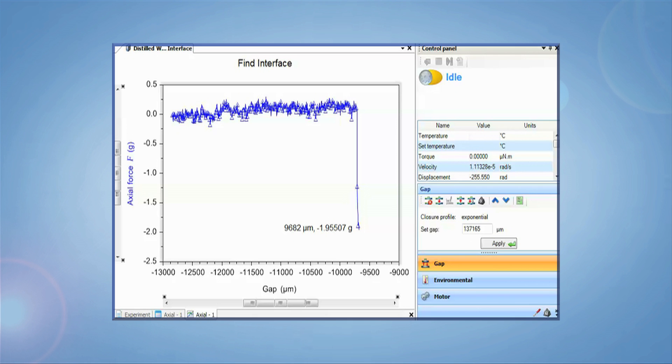Next, lower the ring down by 500 microns. This positions the ring so it is centered at the interface. The axial force should be close to zero at this point.